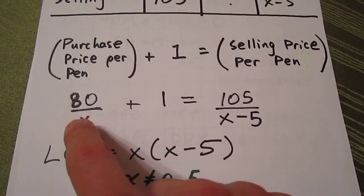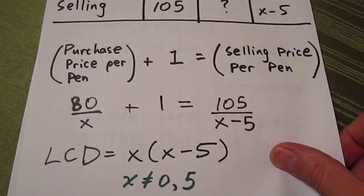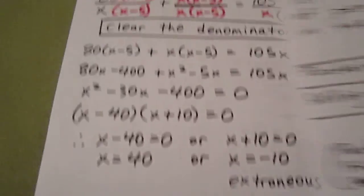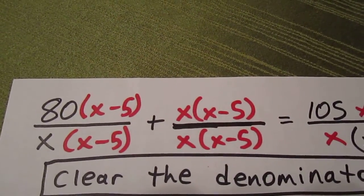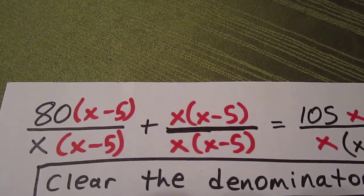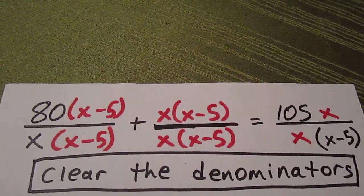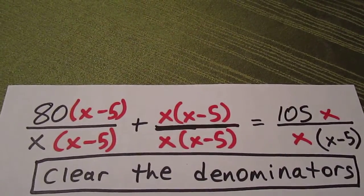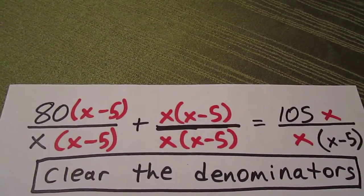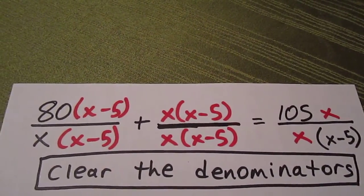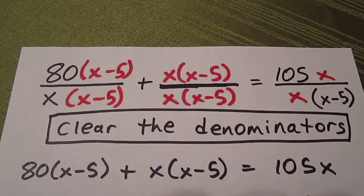Turning the page, we're now going to do some fundamental algebra on each of these rational expressions to get each of them over the common denominator. 80 over X, after multiplying numerator and denominator each by X minus 5, becomes 80 times X minus 5 over X times X minus 5. 1 becomes X times X minus 5 over X times X minus 5. And 105 over X minus 5 becomes 105X over X times X minus 5. We can then multiply every one of these rational expressions by its denominator. This has the effect of clearing out the denominators, allowing us to simply focus on the numerator.